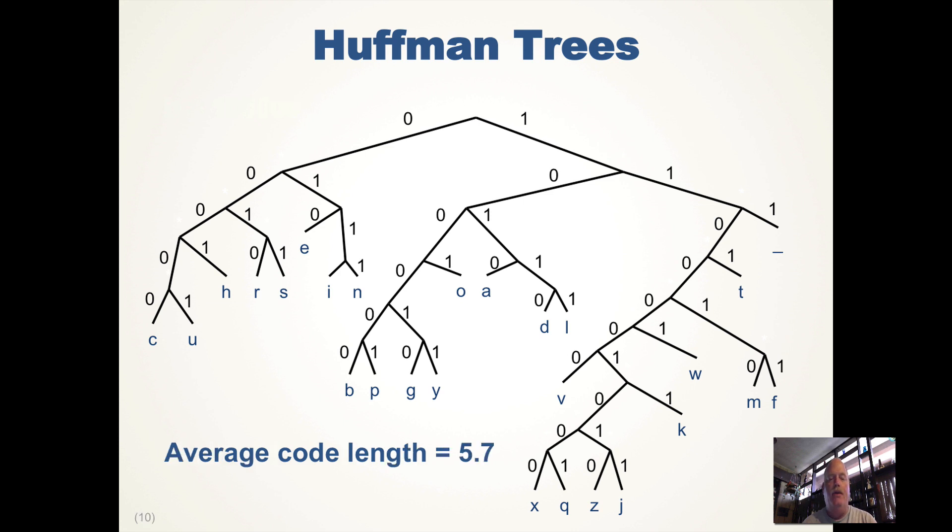The average code length if you take the average of all the heights in this tree is about 5.7, and if you're using a Huffman code, it's going to be shorter than ASCII because ASCII is eight characters for each thing. Since the higher frequency characters have shorter codes, we gain even better compression because the shorter codes will occur more often in our encoded data.